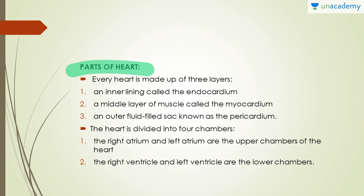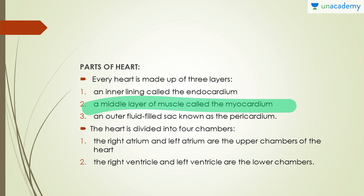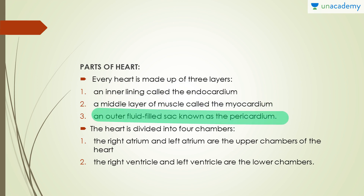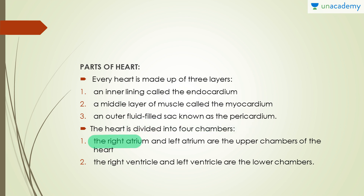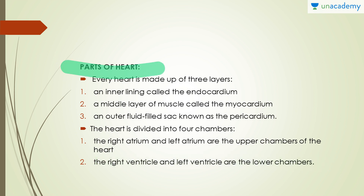The heart is made up of three layers: an inner lining called the endocardium, a major layer of muscle called the myocardium, and an outer layer filled sac known as the pericardium. The heart is divided into four chambers. The right atrium and the left atrium are the upper chambers of the heart. The right ventricle and the left ventricle are the lower chambers of the heart.